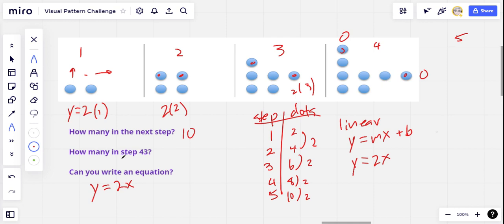So to determine how many in step 43, we simply put in 43 for the step number for x. So y equals two times 43, and that is 86. So we should expect to see 86 dots in step 43.